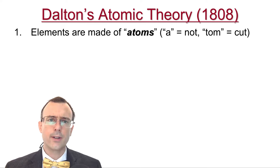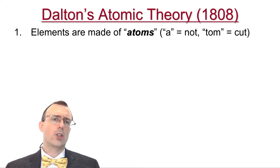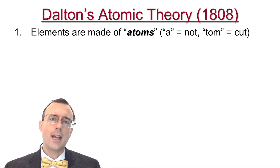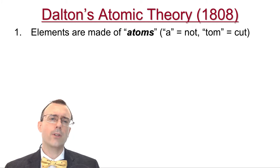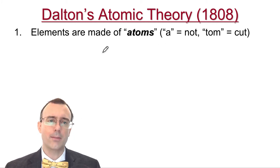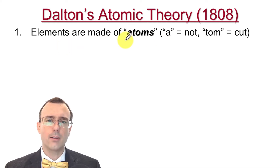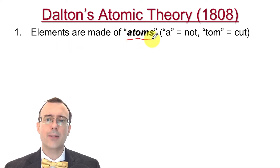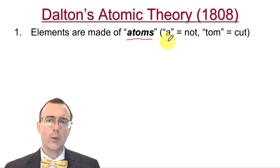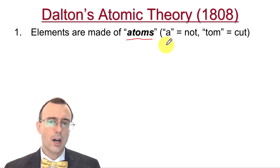I'd like to start off and talk about John Dalton, who was an English scientist. In 1808 he came up with the first real comprehensive theory of atoms. The first thing he said was the elements are made up of atoms, and the term atom comes from the Greek,